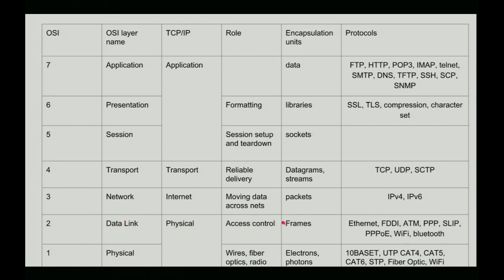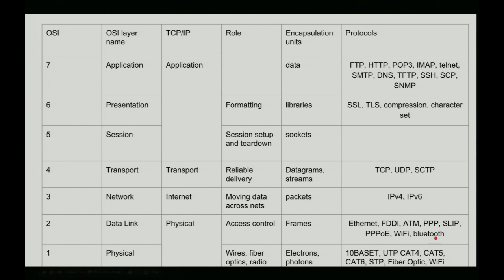Then we go up a layer to the data link layer, where you're interested in access control. The technical term for what goes back and forth is called a frame — only hoity-toity network engineers actually use that word; everybody else uses packet. Examples include Ethernet, which is most common. FDDI and ATM are still found in places. PPP is popular because many connections between your home router and your ISP look like PPP. If you see the acronym PPPoE, that is an Ethernet link masquerading as a PPP link. There's also Wi-Fi and Bluetooth.